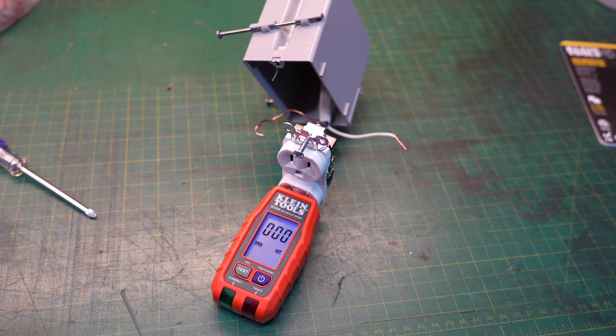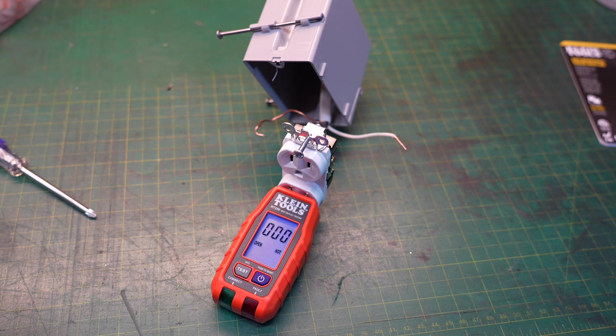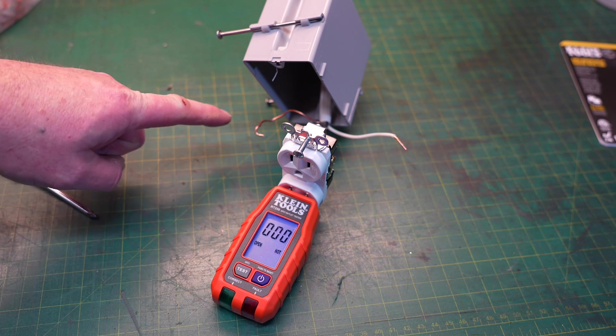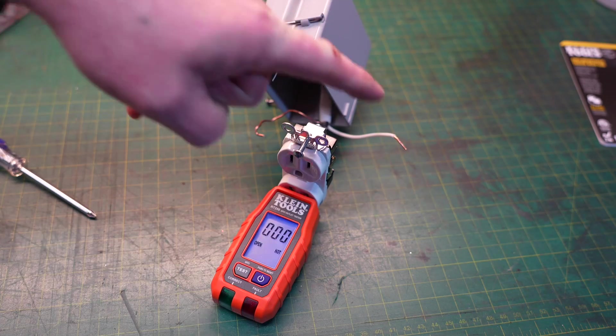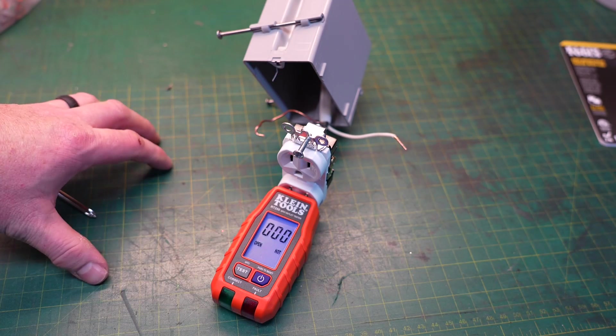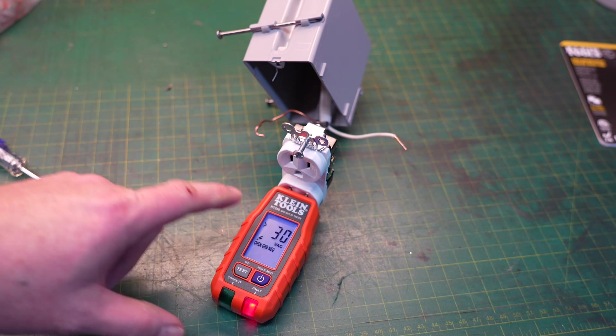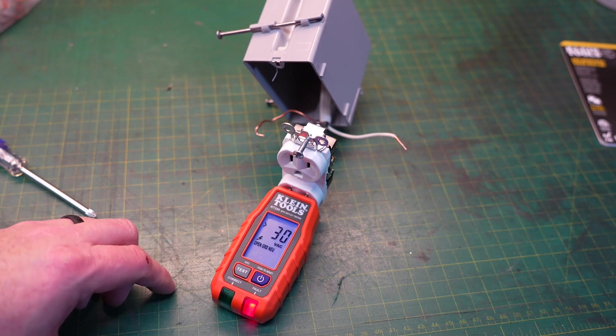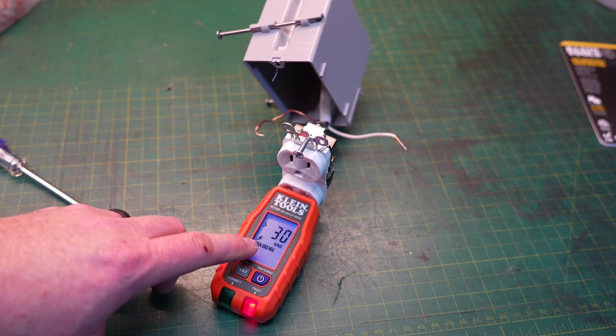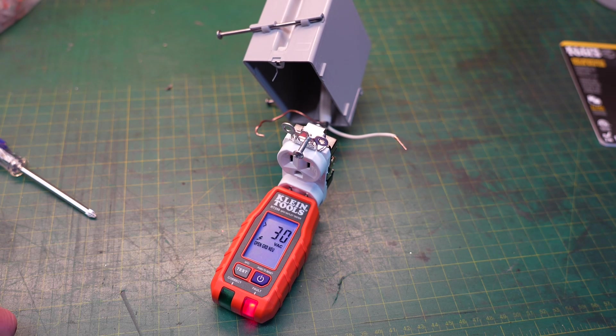Now here's where things get a little bit interesting. This is where a standard tester will probably show nothing because they don't have any power and they're not capable of doing this. I have the ground disconnected, the neutral disconnected, and the only thing that is connected is the hot wire. Once power is restored you can see that it detected over 30 volts and it is telling us that it has an open ground and an open neutral. That's pretty impressive.